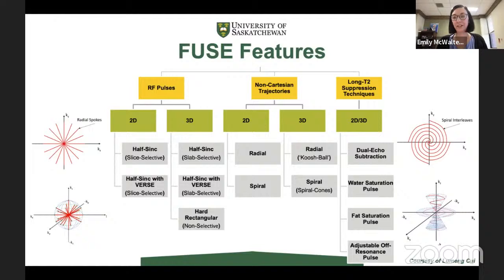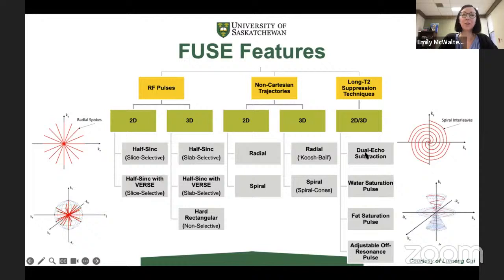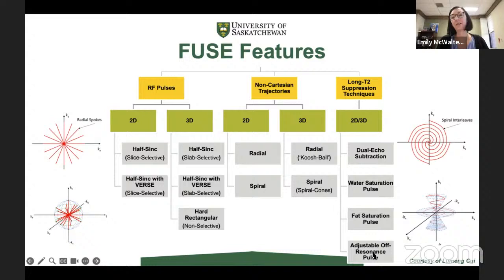The meniscus is a shorter T2 tissue in the knee. We also have bone, tendons, and ligaments — all short T2 tissues important in knee function — that need a UTE sequence to image them properly. We have a choice of RF pulses: half-sinc and burst in 2D, and a hard rectangular in 3D. We have our different trajectories, and we added long T2 suppression techniques: dual echo subtraction, water saturation, fat saturation, and an off-resonance pulse for UTE QMT. We also have inline off-resonance artifact correction, including a new method for 3D off-resonance correction that's working really nicely.